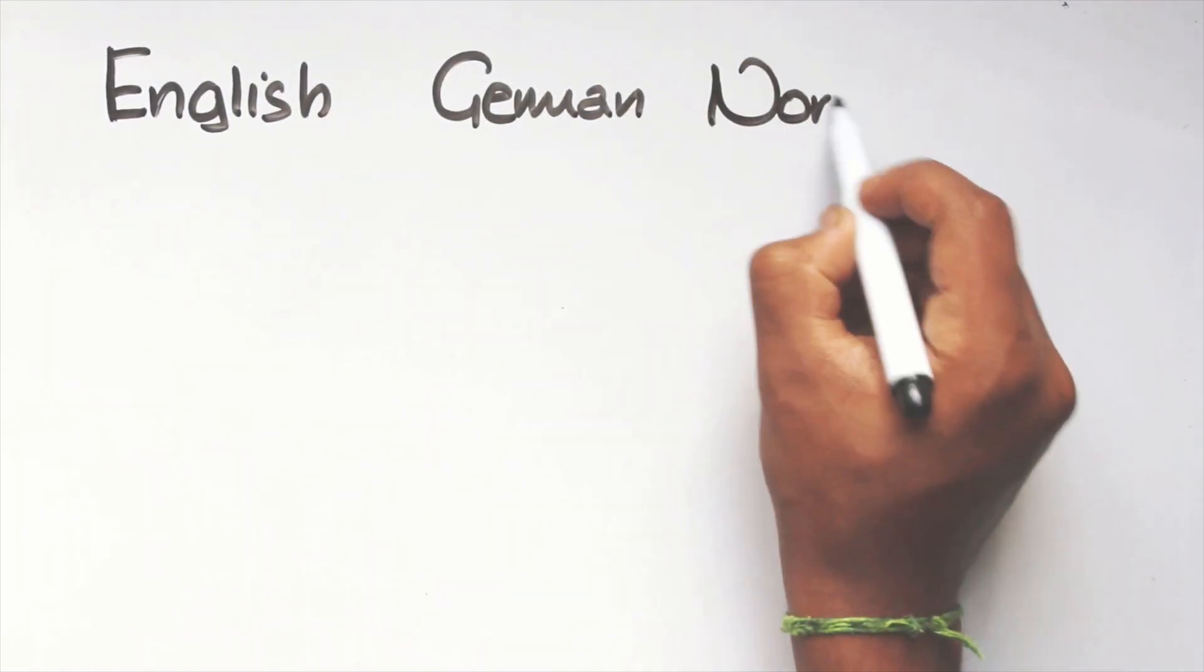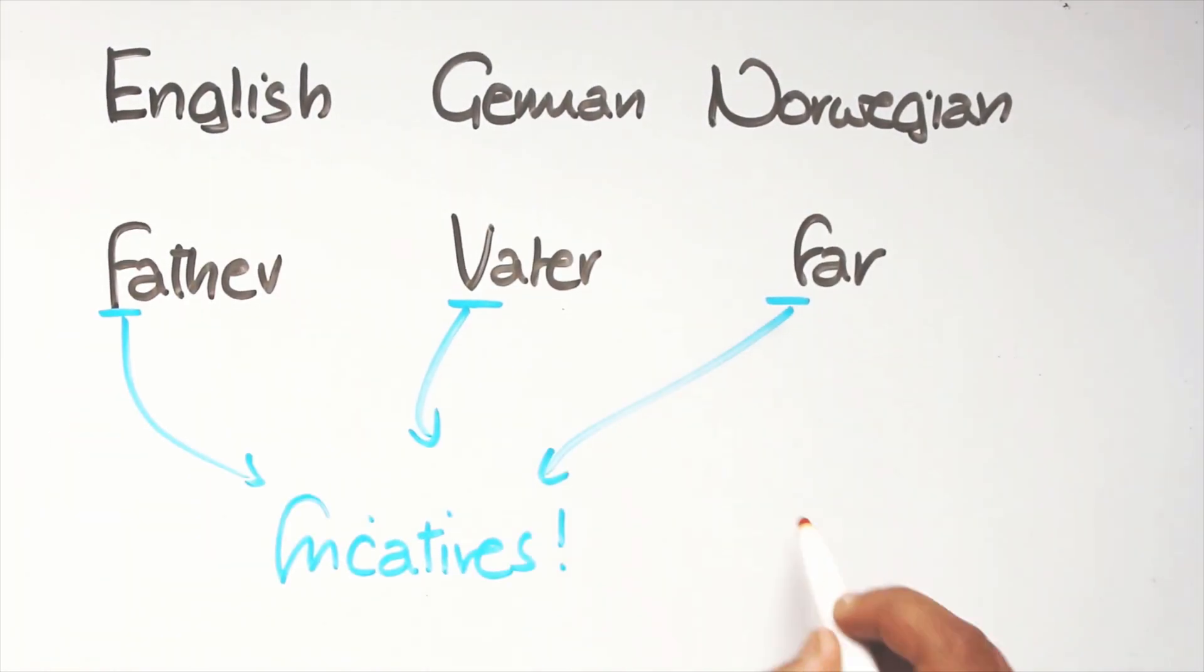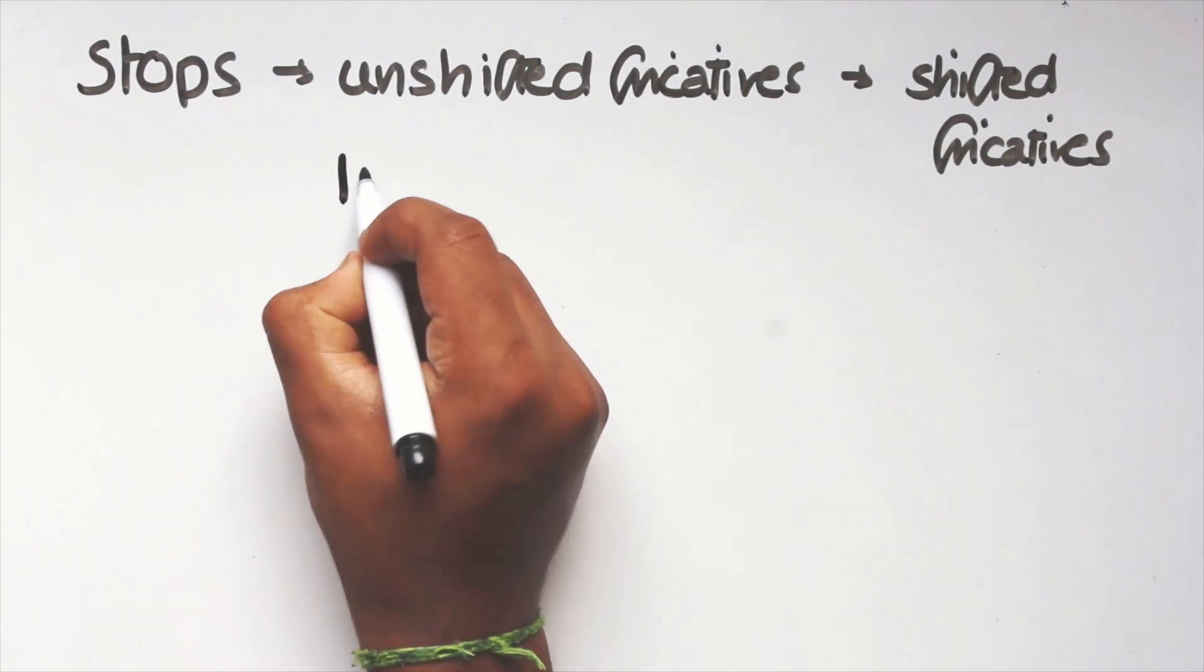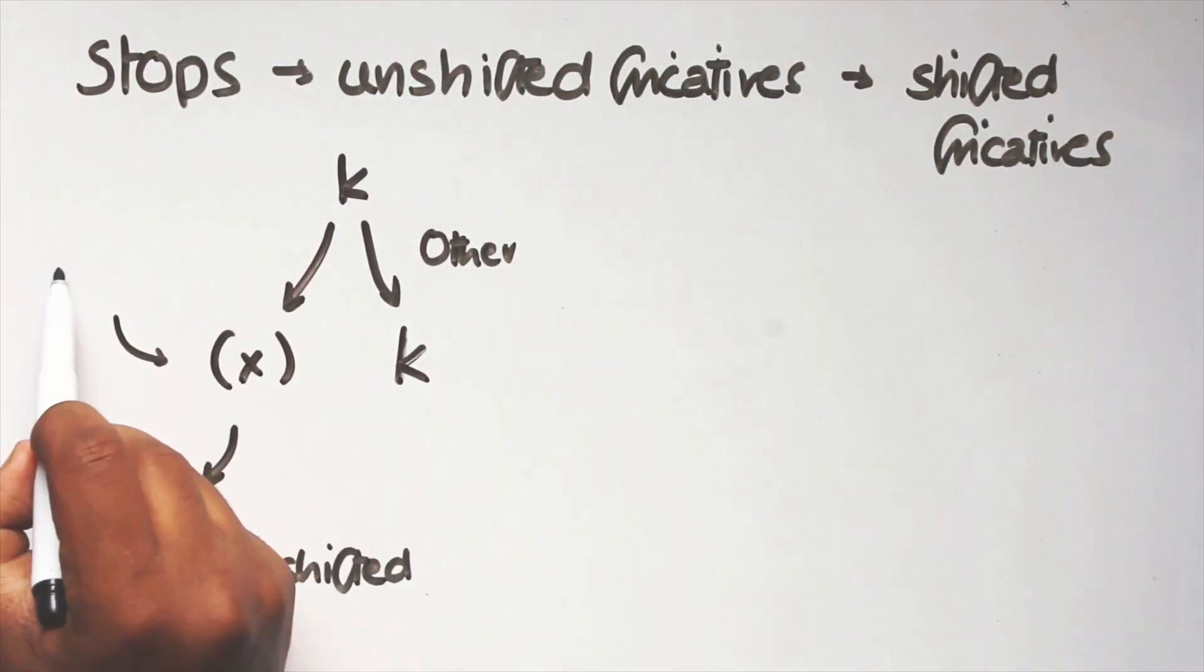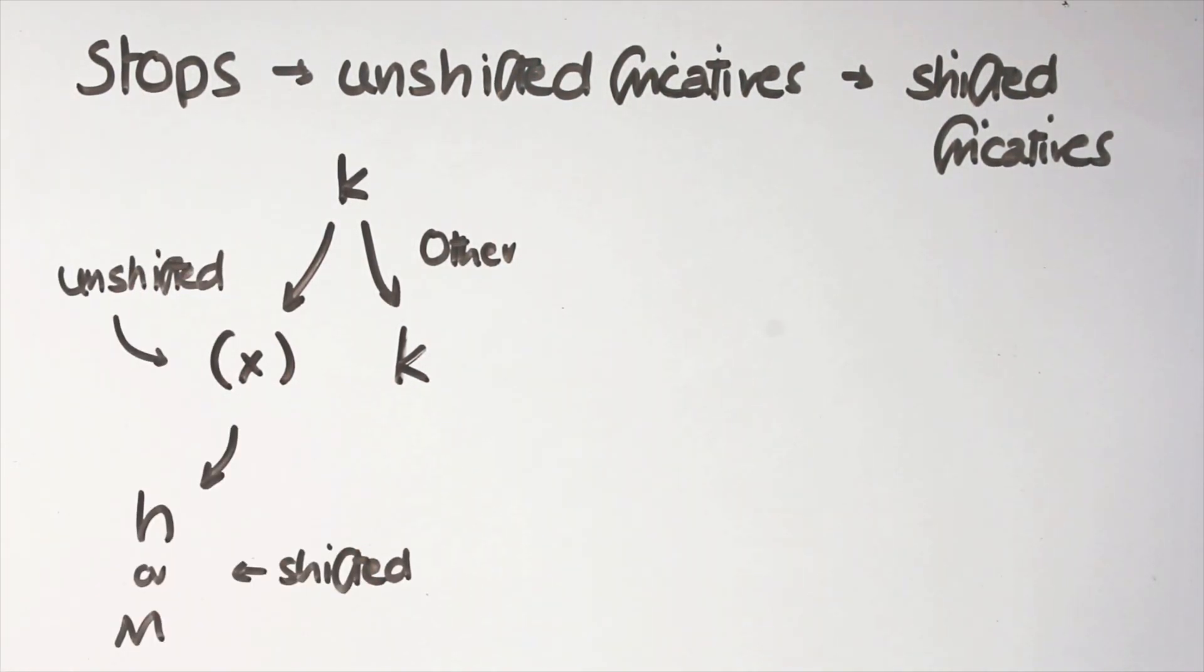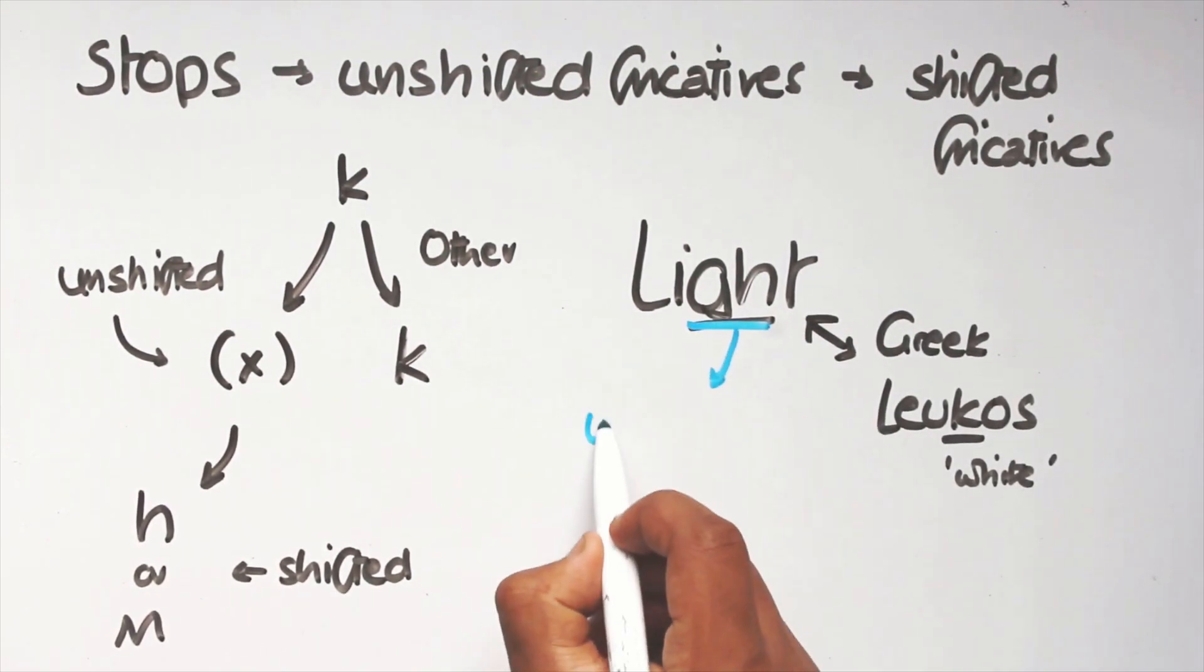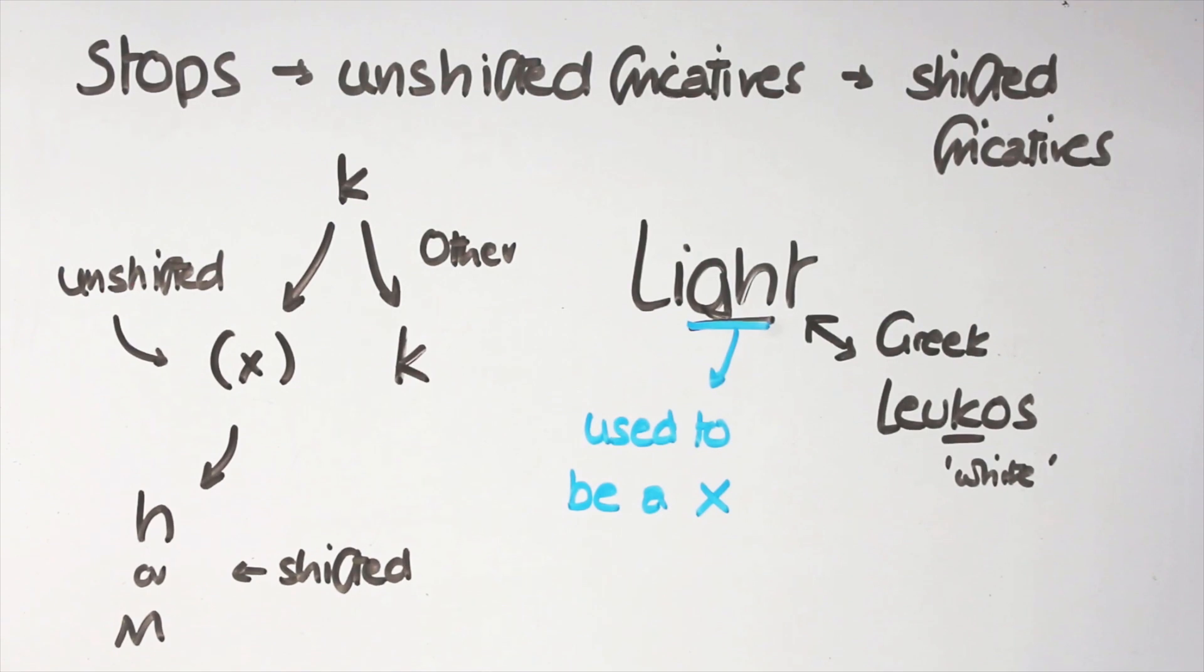This is why English, German and Norwegian have fricatives instead of the stops that we saw in the other languages. The shifted fricatives were probably unshifted at an intermediate stage, which we can see clearly with the velars. We get a glimpse of the unshifted velar fricative, before it turned to a glottal fricative, in the spelling of English light, which is cognate with Greek Levkos, which has a K. The GH spelling comes from a time when it was actually pronounced as a velar fricative. That pronunciation is still alive today in German Licht, which means the same thing.